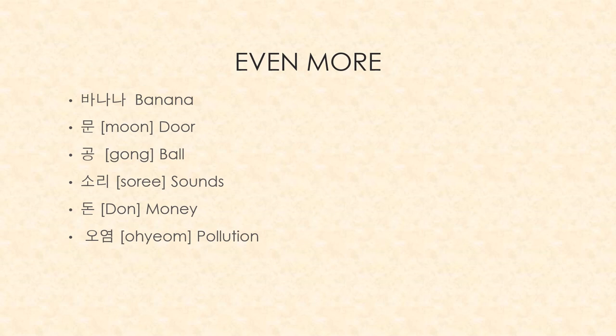Here's some more practice. First is 'banana,' which is easy to pronounce — banana. Second is '문,' meaning 'door' — moon. Then '공,' meaning 'ball' — remember when the circle is in the bottom it's NG, so G-O-NG, gong. Then '소리,' meaning 'sound' — sori. And '돈,' meaning 'money' — don. Remember this vowel is a long O sound, not 'ah' — it's don. And the silent circle at the start means it begins with the vowel sound — o-yum.